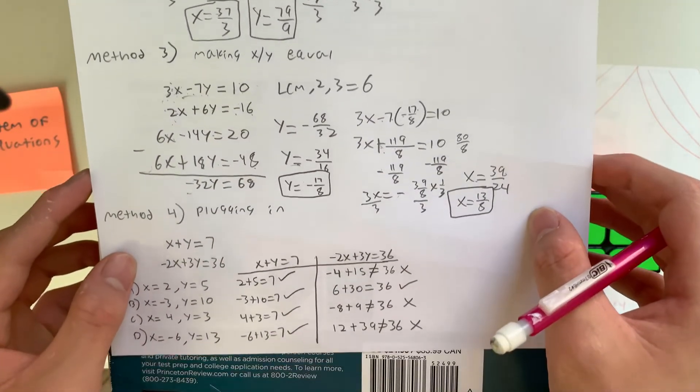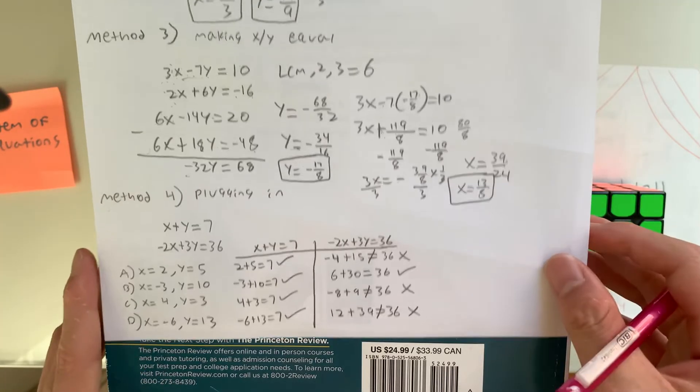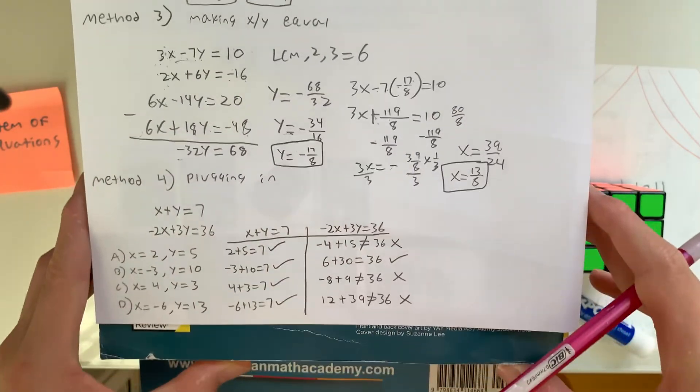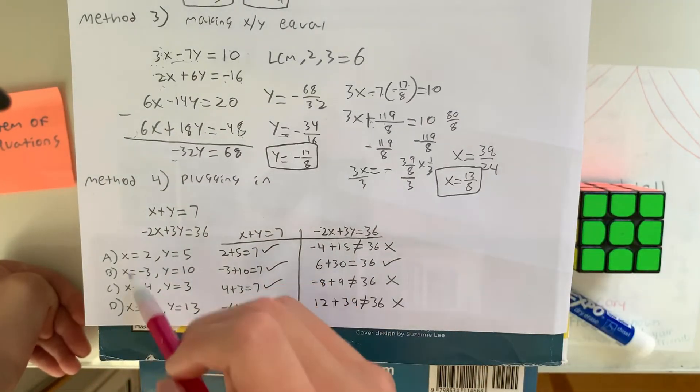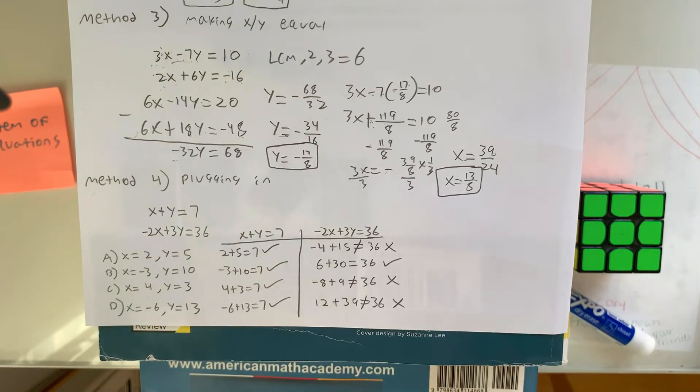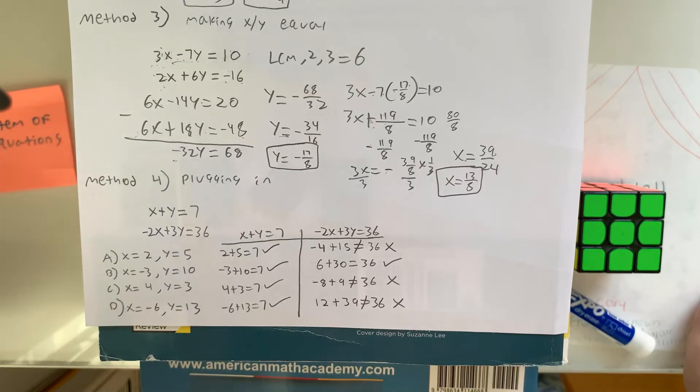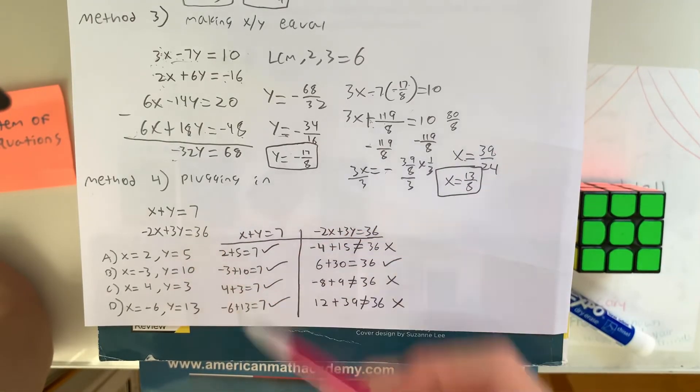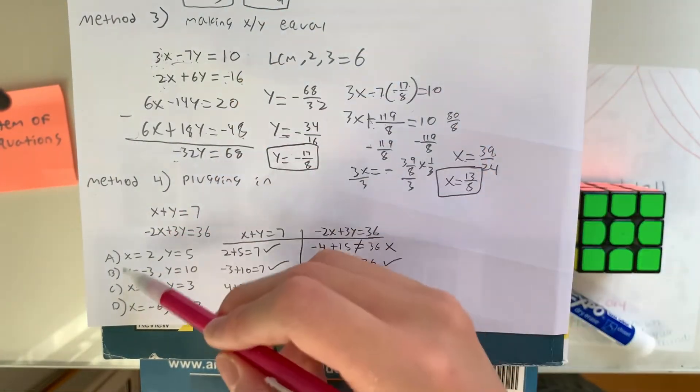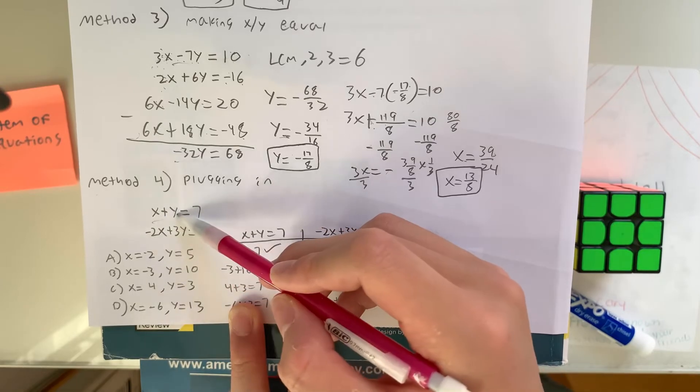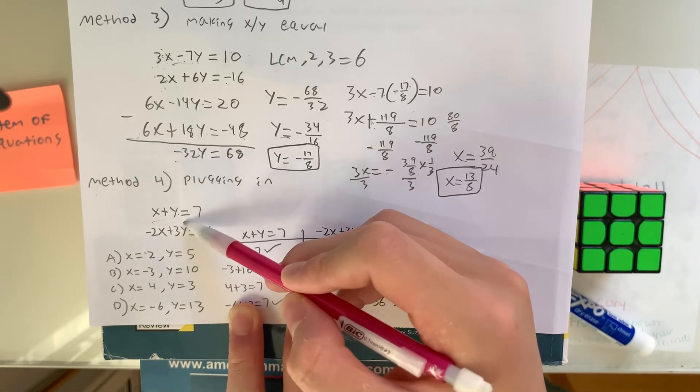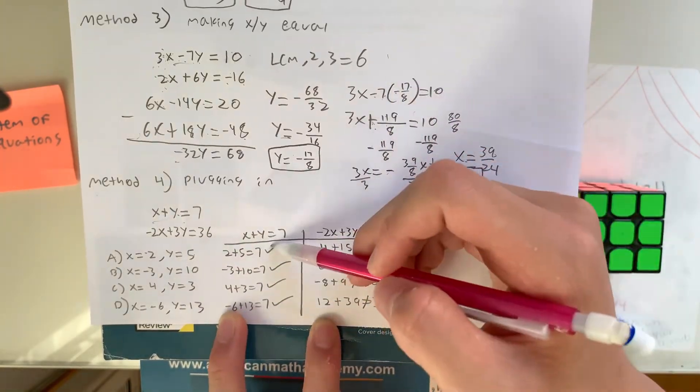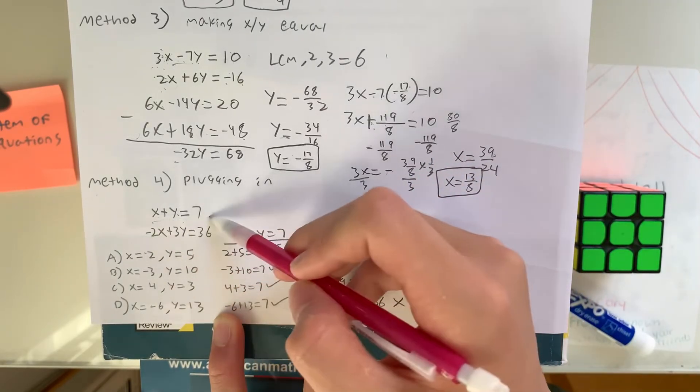And the fourth method only works for multiple choice questions. It's called plugging in. So if you have four answers on the SAT multiple choice section, and you're too lazy to do any of the three other methods, you could just plug in your number. How does this work? We have these equations right here, and you're going to try to plug in the values for x and y, and see which ones work. In this case, all of them added to 7.